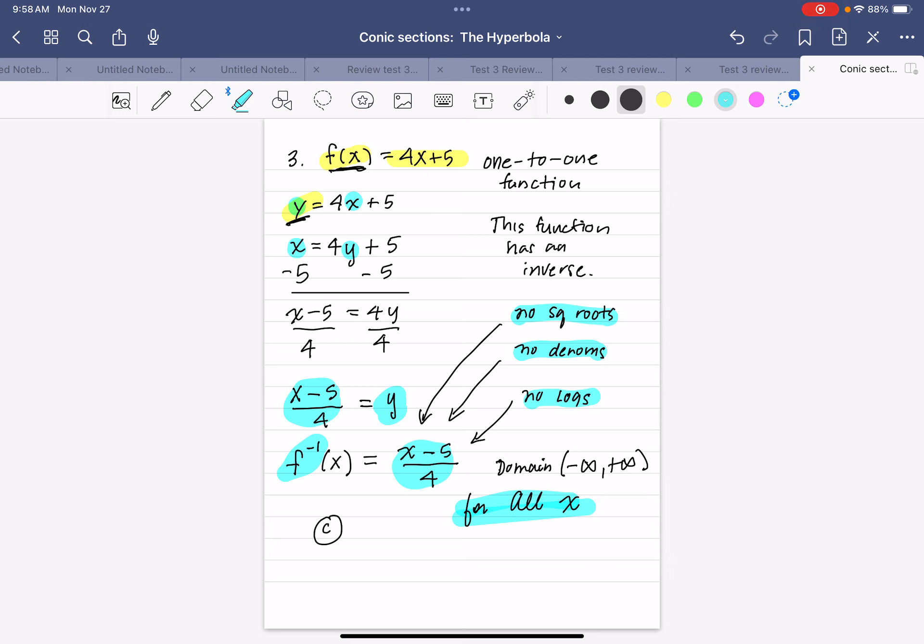So even though we have a denominator here, it can never be zero because it's always 4. So this is what we believe is our inverse. This expression right here is what we believe is our inverse.